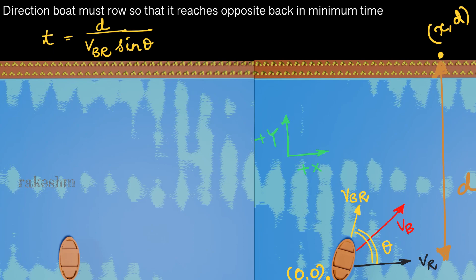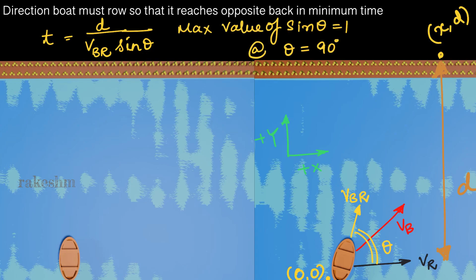If sinθ is maximum, the time will be minimum. The maximum value of sinθ is 1 and this occurs at θ equal to 90 degrees. What does this mean? If θ is 90 degrees, it means the angle between the velocity of the river vr and the velocity of the boat with respect to the river vbr must be 90 degrees.